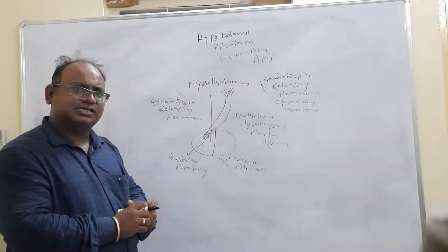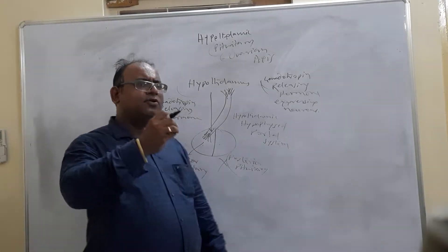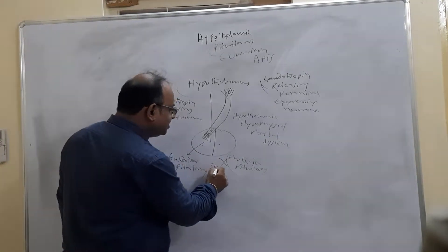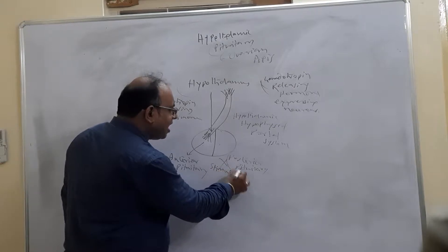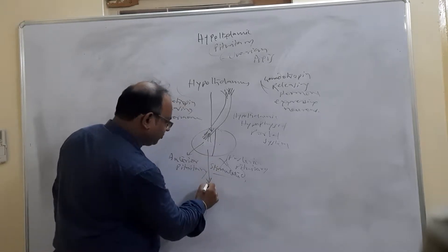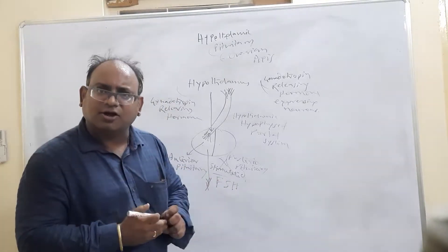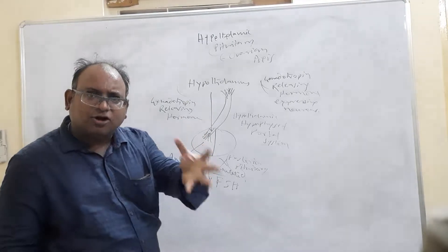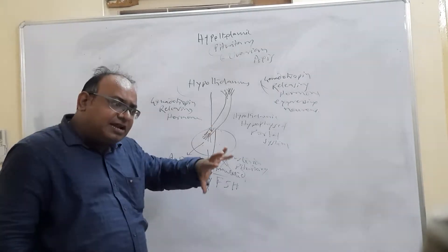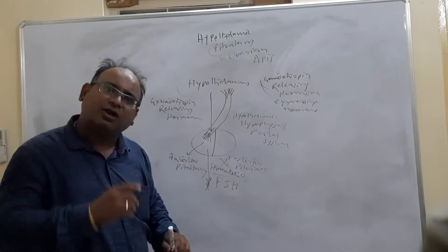When the hormone reaches the anterior pituitary, the anterior pituitary gets stimulated. When the anterior pituitary gets stimulated, it releases another hormone called follicle-stimulating hormone — FSH. So when hypothalamus releases gonadotropin-releasing hormone, it comes into the anterior pituitary, which in turn releases follicle-stimulating hormone.